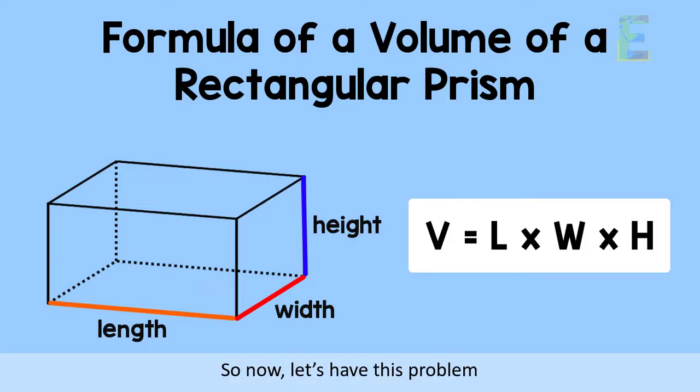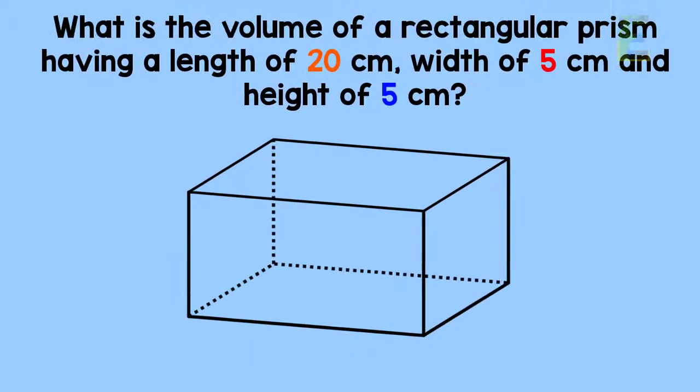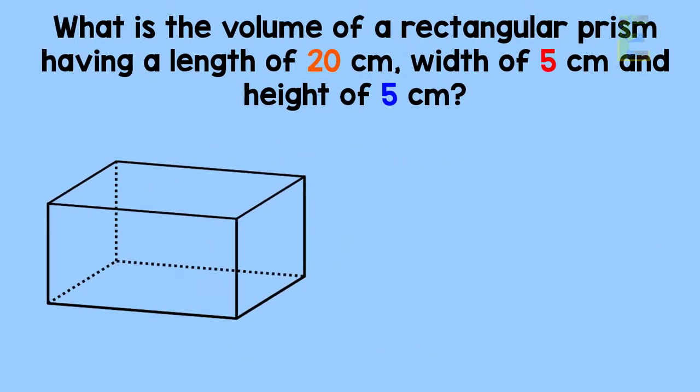So now let's have this problem. What is the volume of a rectangular prism having a length of 20 centimeters, width of 5 centimeters, and height of 5 centimeters?